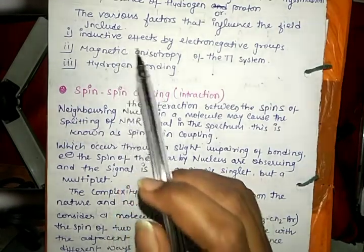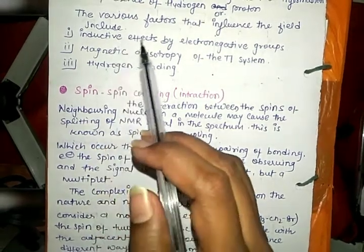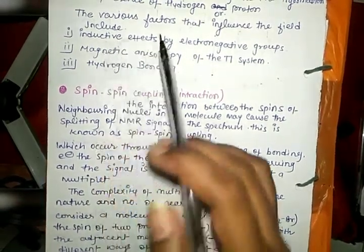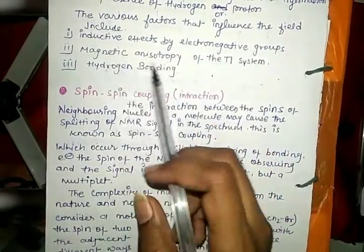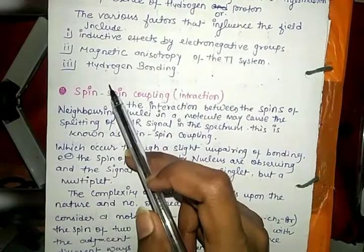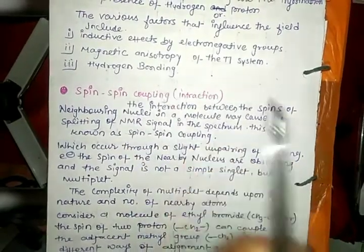The various factors that influence the field include: first, inductive effect by electromagnetic groups; second, magnetic anisotropy of the pi system; and third, hydrogen bonding.